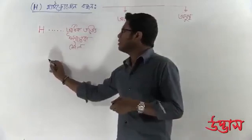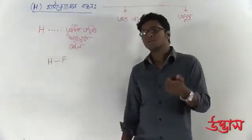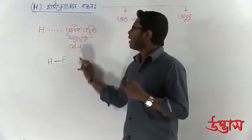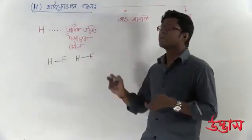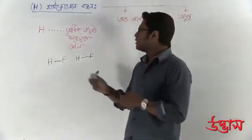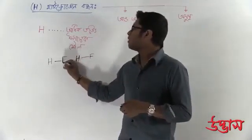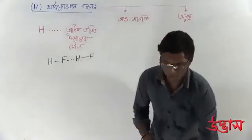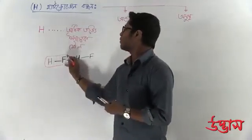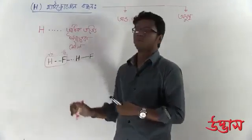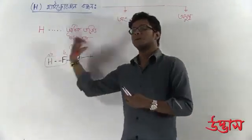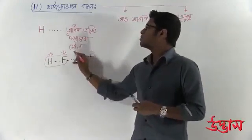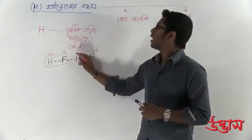Hydrogen bonding is a trait in which, for example, we are talking about hydrogen fluoride. If we consider hydrogen fluoride, we use a dipole-dipole interaction. Dipole-dipole means that the fluorine has a delta minus charge and the hydrogen has a delta plus charge — this is the polarity of hydrogen fluoride.